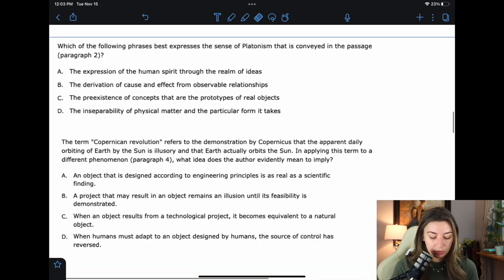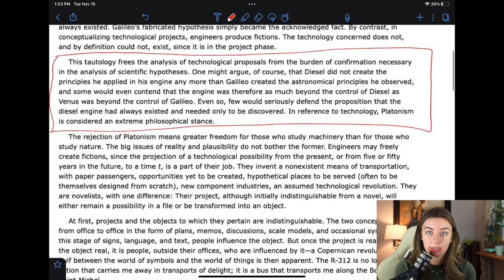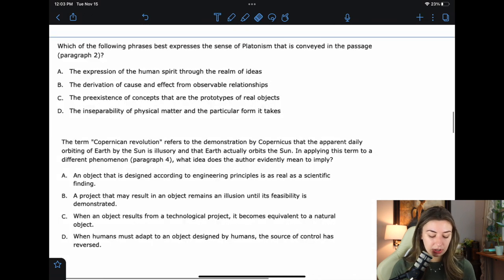So let's start now on the questions. Which of the following phrases best expresses the sense of Platonism that is conveyed in the passage? Paragraph 2. I told y'all this Platonism thing was going to come in handy. So they did mention the paragraph, so I actually do want to go and look a little bit at it. Listen to me. Even if they mention the paragraph, do not spend more than 10 seconds here. This is the one he was talking about, diesel, and how nobody would say that the engine was already created. That was Platonism. So it says, A, the expression of the human spirit through the realm of ideas. I don't really think it had anything to do with the human spirit. If I was to say what I think Platonism is, I would say, I think Platonism is the idea that things are already there and they just have to be discovered.